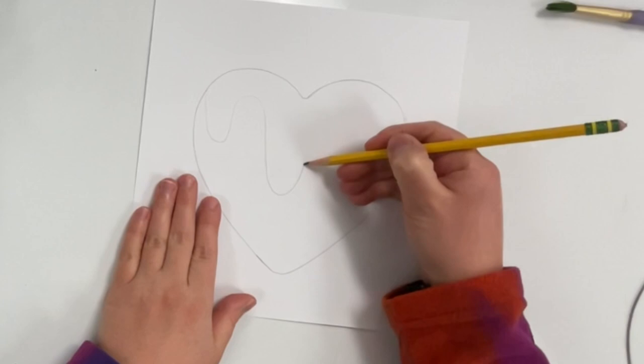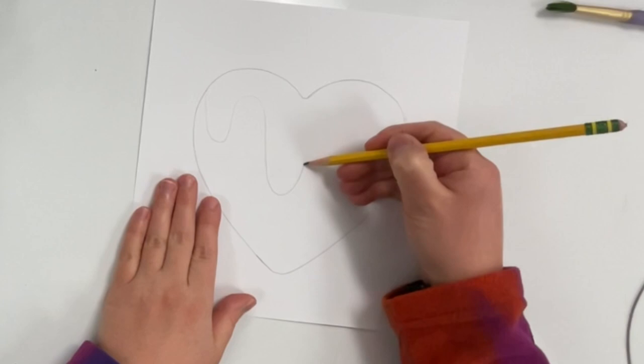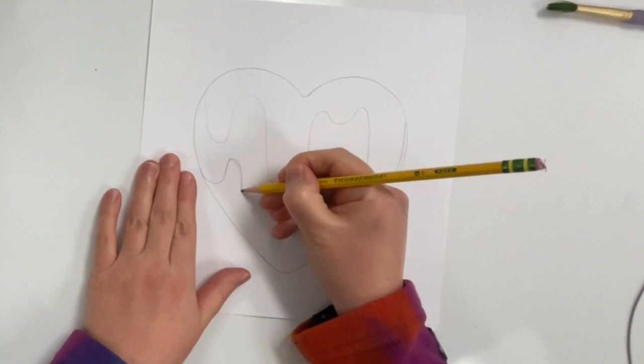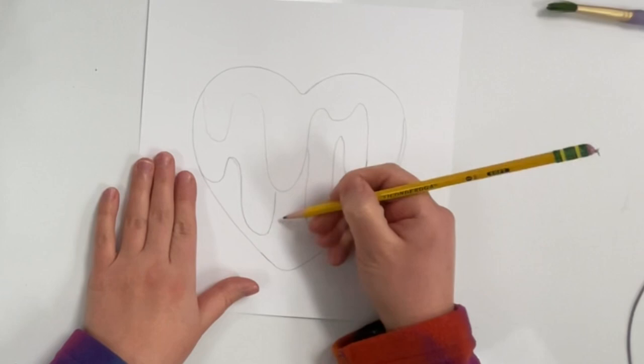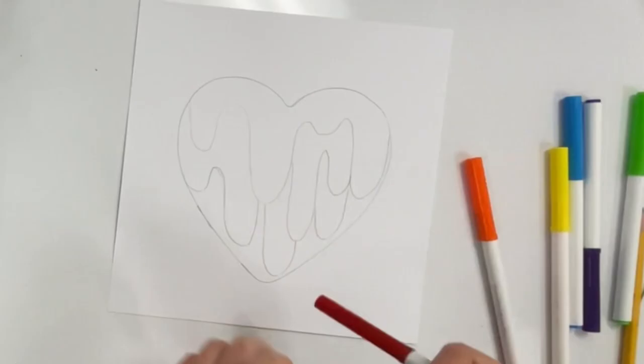Now I will draw some drip lines inside the heart. My drip lines are curvy and wavy and irregular. That means they're not all the same. Some are long, some are short, some are wide, some are thin. And this makes the drips look more natural. You also notice that they're overlapping each other.